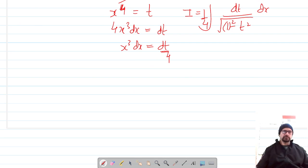Now this is of the form 1 upon integration of a squared minus x squared under root, which is equal to sine inverse x by a. Let's use this identity here on this.